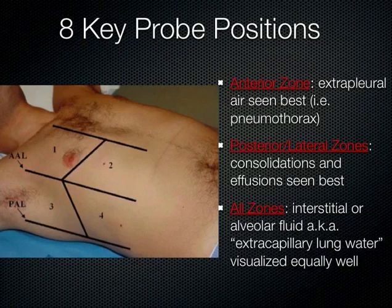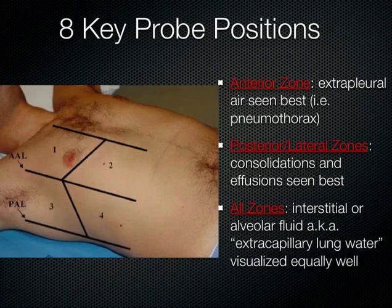Anteriorly is the best place to look for a pneumothorax. If you're supine and air has escaped from inside the lung into the pleural space, it's going to be anterior. Posteriorly and laterally, we can best see effusions — fluid in the pleural space — and consolidations, which are pneumonias or atelectasis of the lung, because those are gravity-dependent.